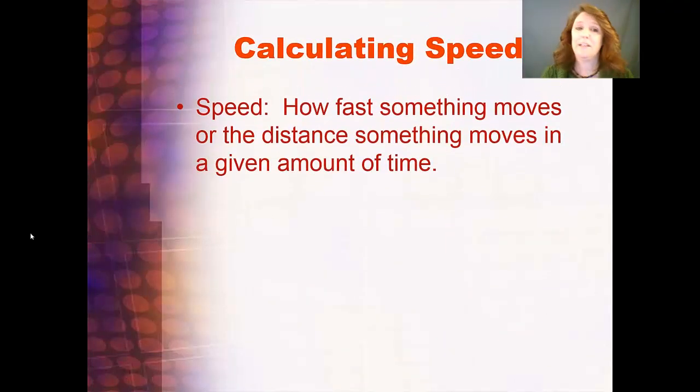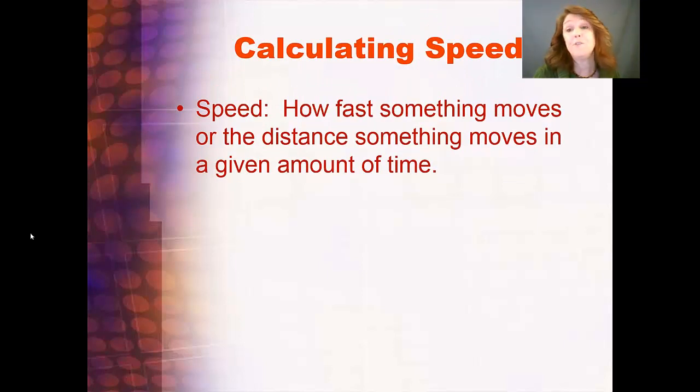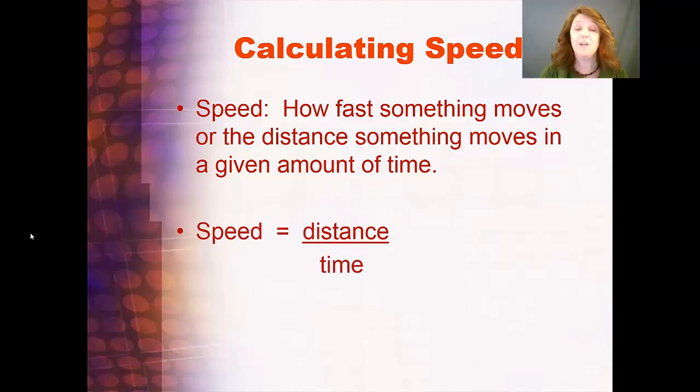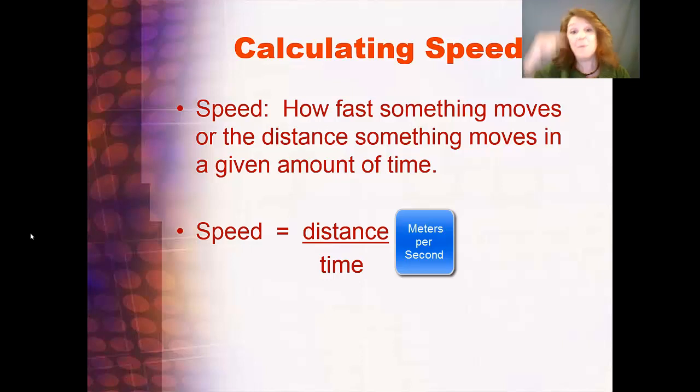We're going to first learn how to calculate speed. Speed is how fast something moves, or the distance something moves in a given amount of time. When you're looking at speed, you need two constants: how far did you go, and how quickly did you do it? The equation for finding speed is distance divided by time. If you have distance and you have time, you divide it, and that gets you speed. Speed is in meters per second, because meters is the distance and second is the time.